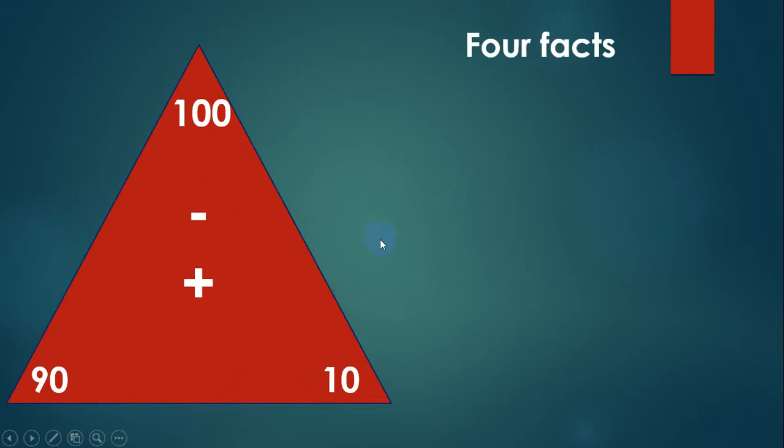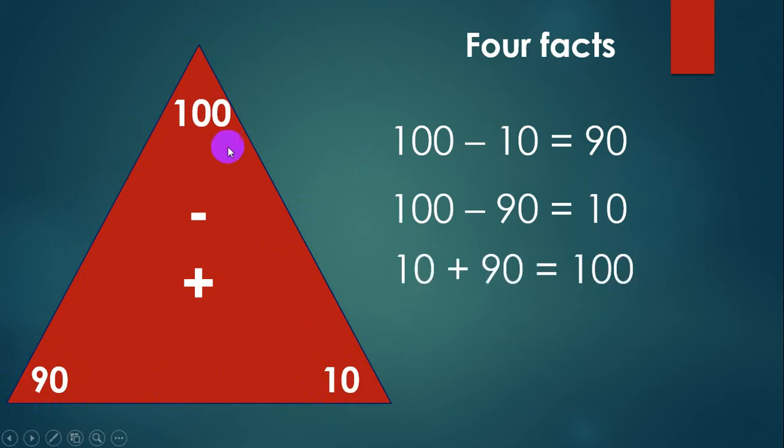The first fact, if I move from this side to this: 100 minus 10 is equal to 90 because when I use these two numbers only 90 is left. Now the second one is 100 minus 90 is equal to 10. Now 10 plus 90 is equal to 100.